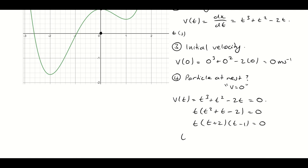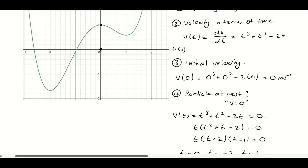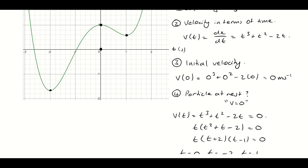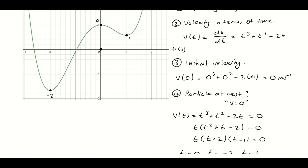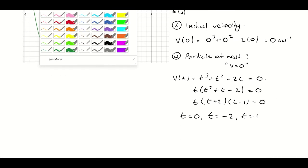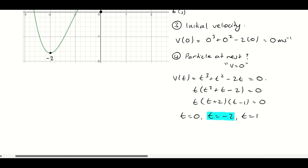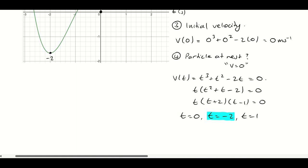Using the null factor theorem: t equals 0, t equals minus 2, and t equals 1. That makes sense because the critical points on our graph where the gradient equals 0 occur at t equals negative 2, 0, and 1. However, we can't have negative time, so t equals minus 2 is not valid. The particle is therefore at rest when t equals 0 and t equals 1.